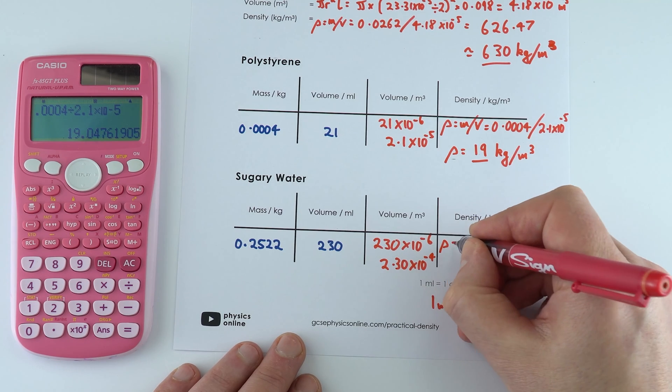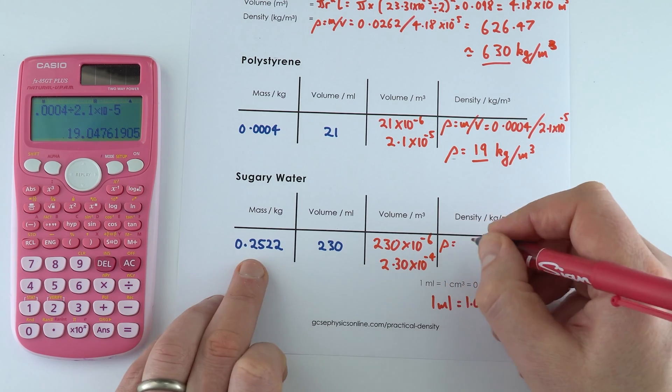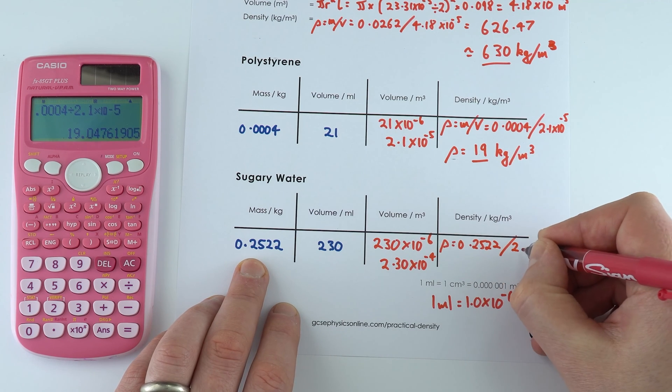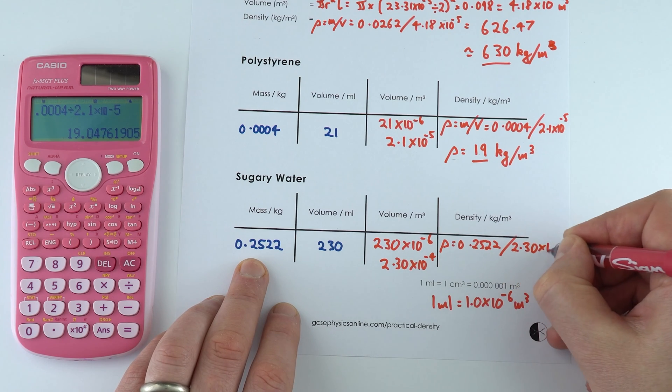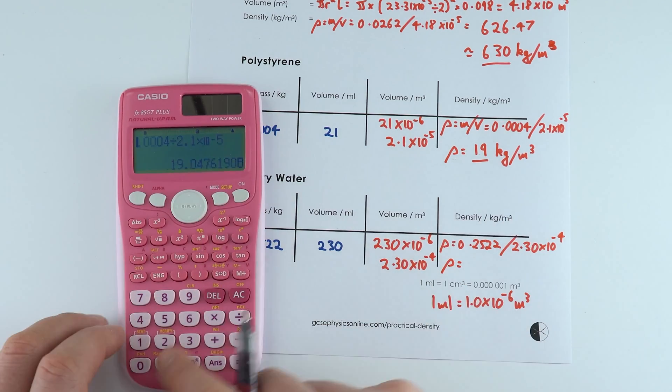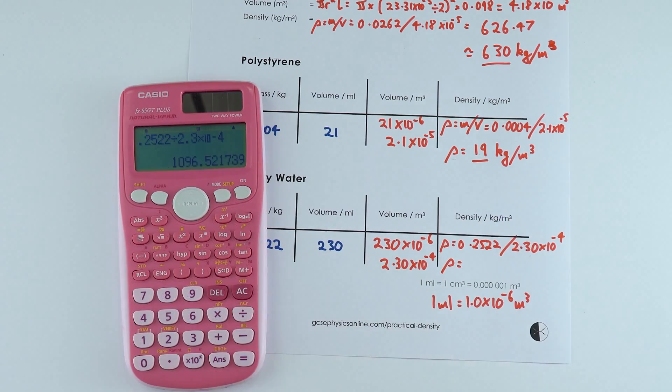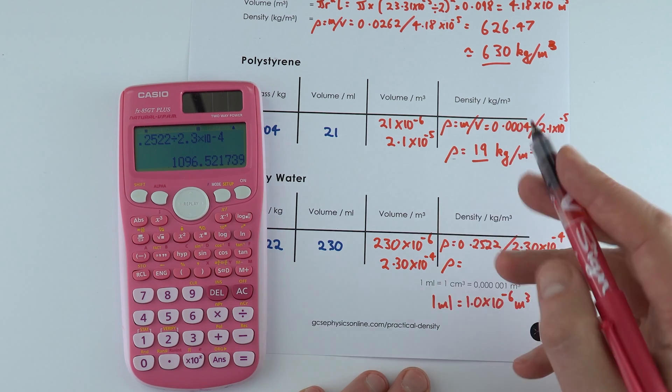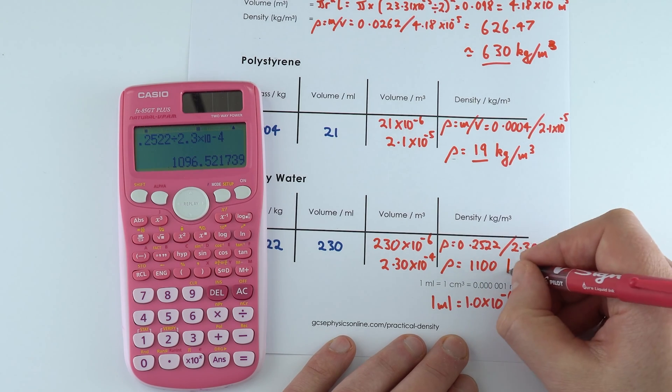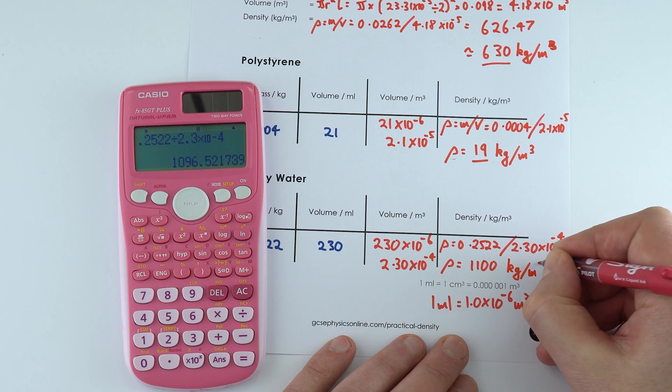And again density is going to be this mass divided by that volume. So 0.2522 divided by 2.30 times 10 to the minus 4. And then again if I just use my calculator, this gives a value of 1096.5. So to three significant figures that would be 1100 kilograms per cubic meter.